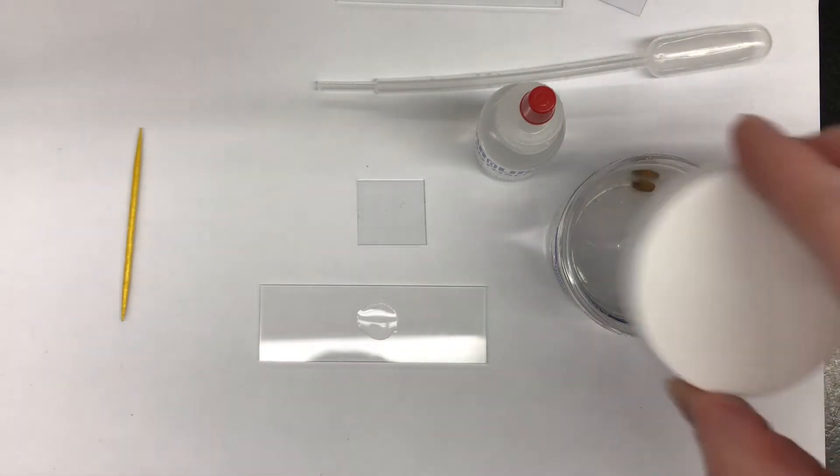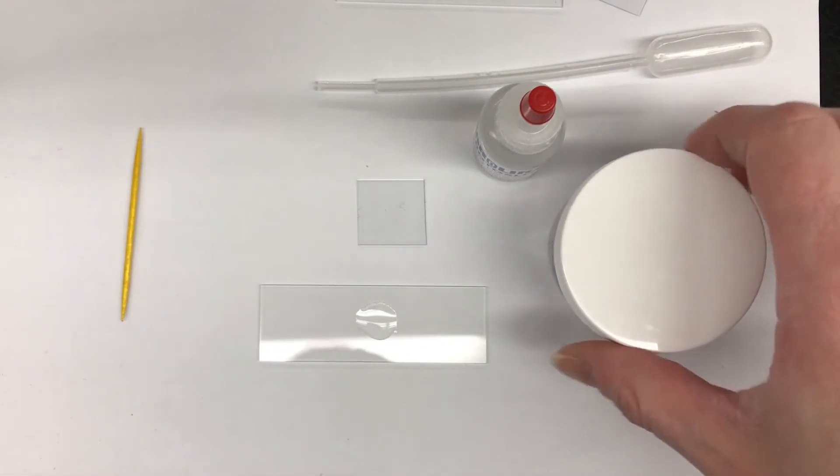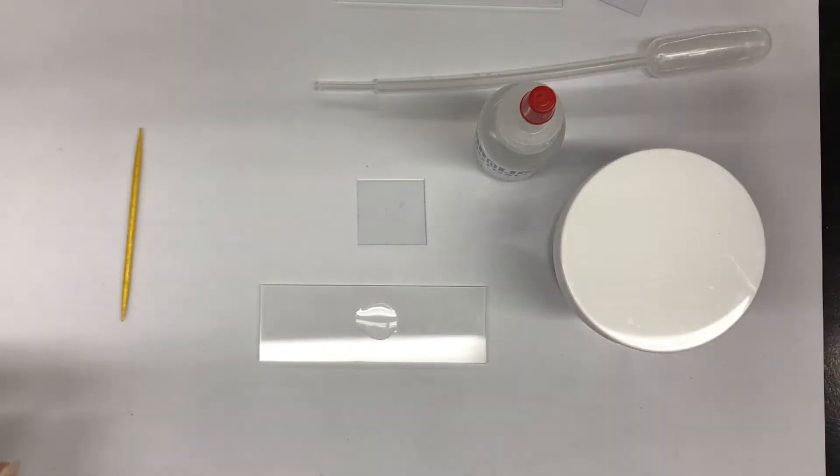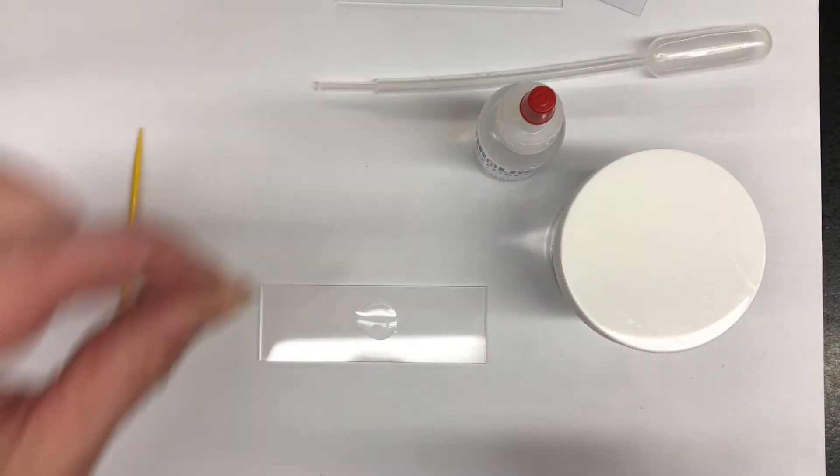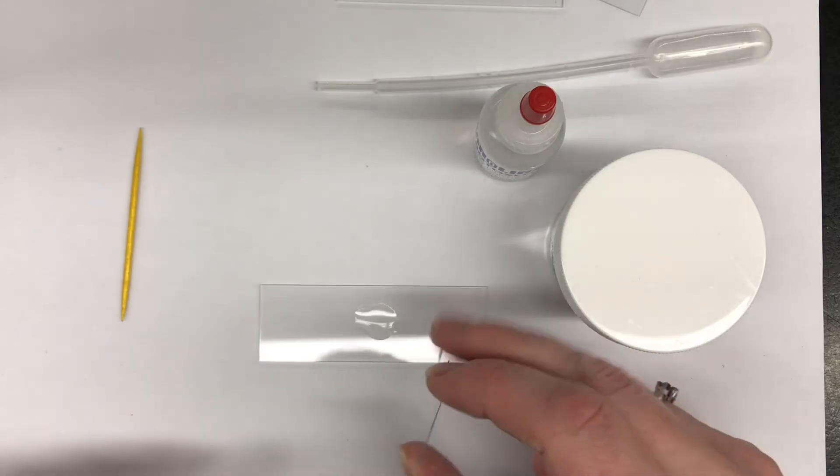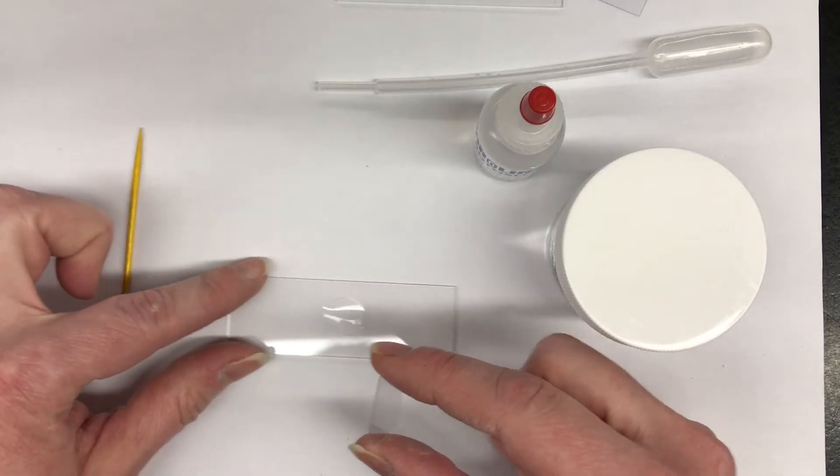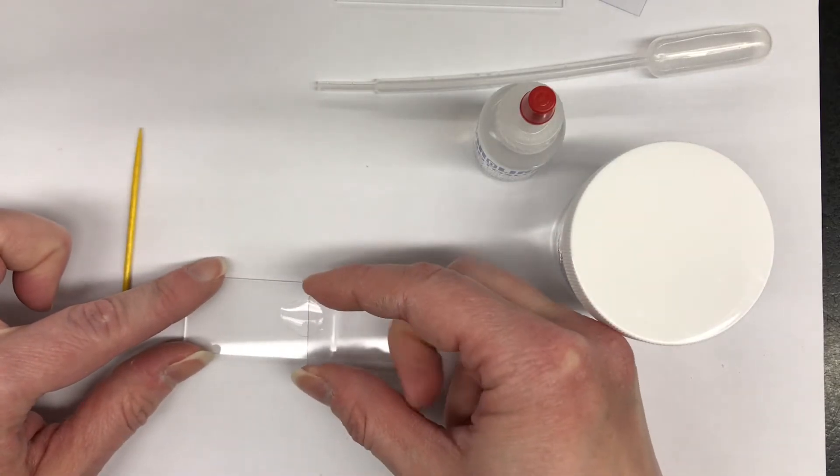You're going to take the jar lid and place it back on your specimen. Pick up your cover slip.